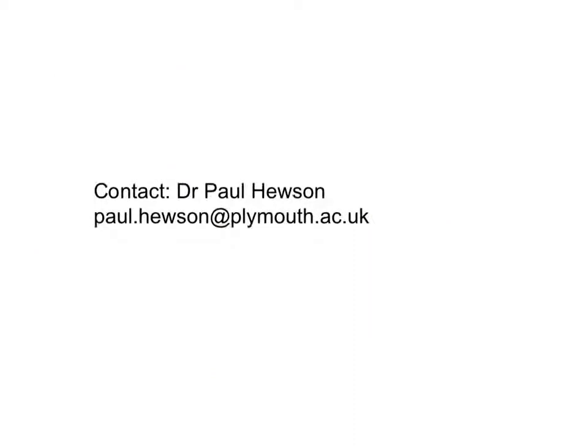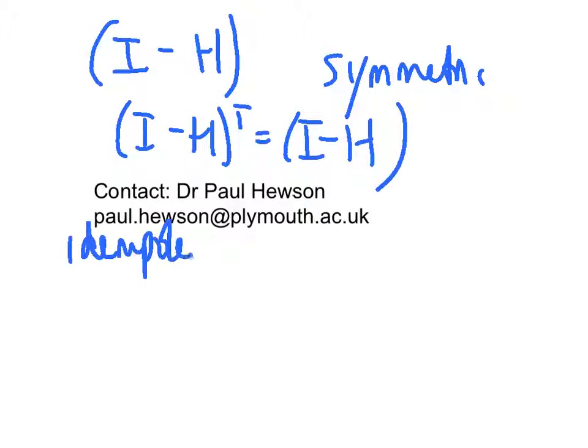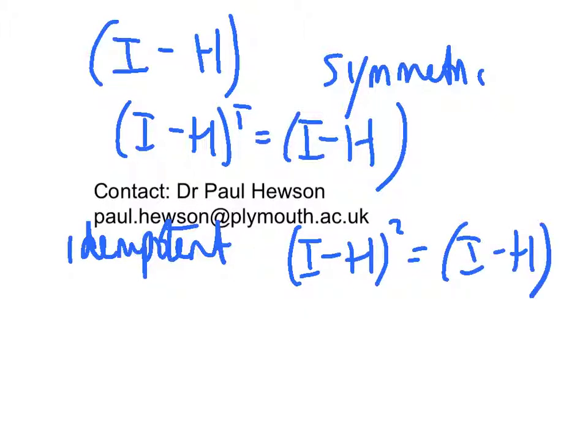So three properties of this other matrix. We subtract a hat matrix from the identity matrix. It's symmetric. I minus H transpose equals I minus H. It's idempotent. I minus H squared is equal to the identity minus H. And the trace of this matrix is equal to n minus p.